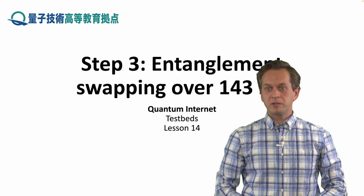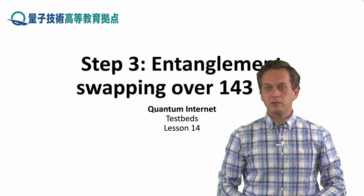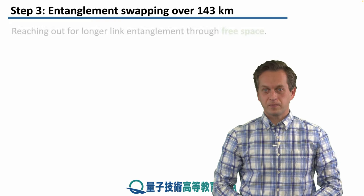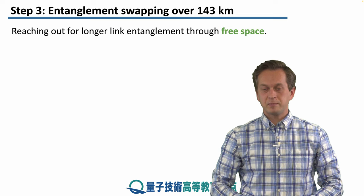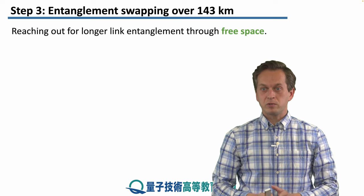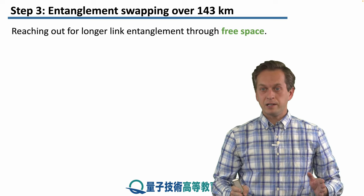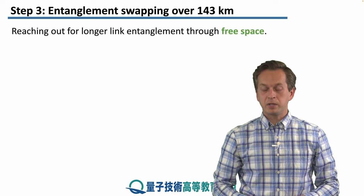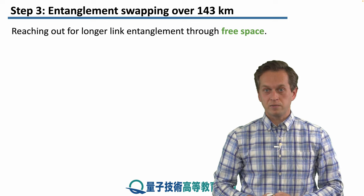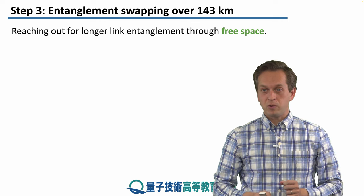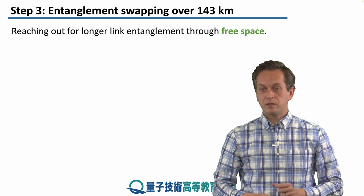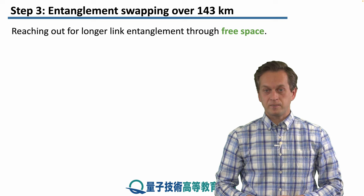Step 3: Entanglement swapping over 143 km. In this experiment, the point was to create link-level entanglement between very distant nodes using only photons traveling in free space.